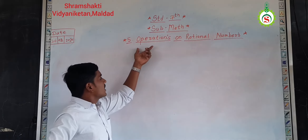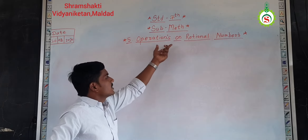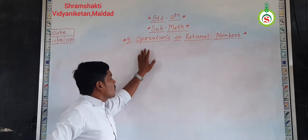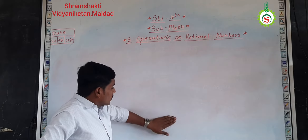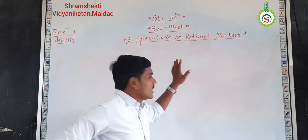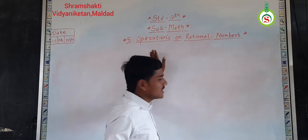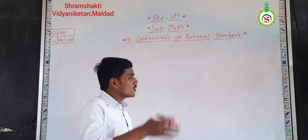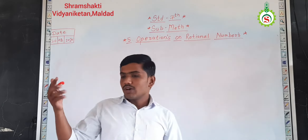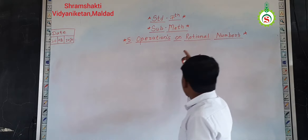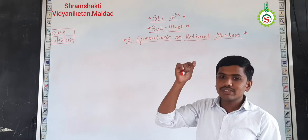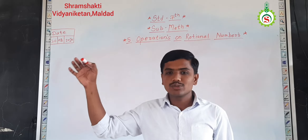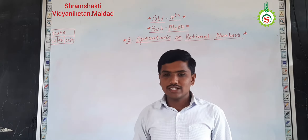we have started this number of chapters. Before that, we have seen two lectures on this same chapter. Into that we have seen: what do we mean by rational numbers? Rational numbers means the numbers which are similar to the rational numbers.